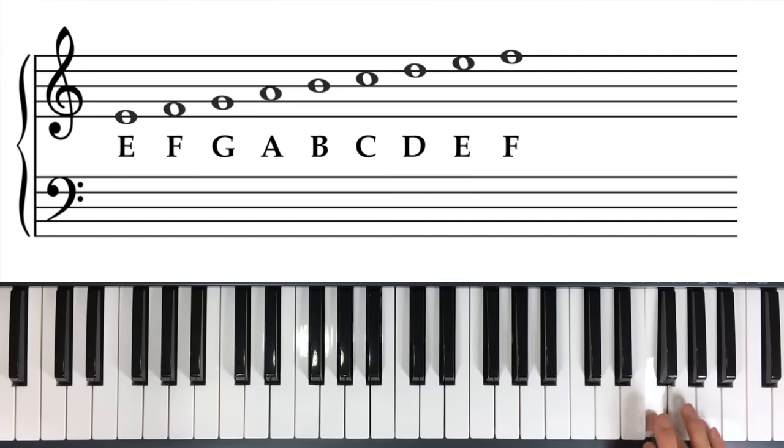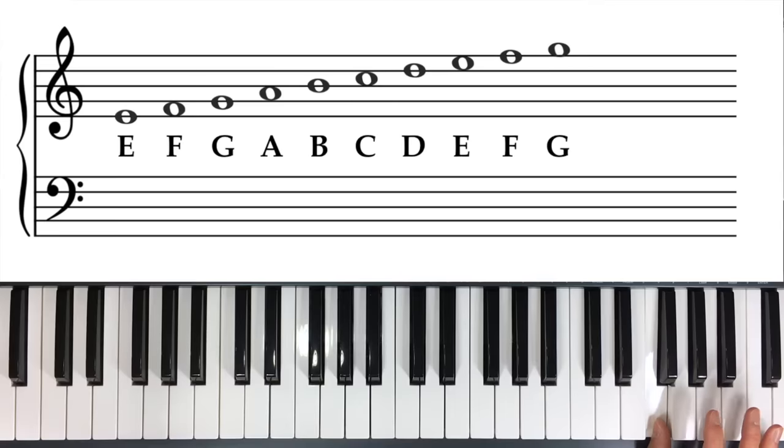Now another important concept is what if we wanted to keep going higher? Well, we have the final line there at F. We know that you have to go line, space, line, space, so the next thing has to be a space. So we draw the G at the top of the line. It doesn't have a line running through it, so it's technically a space. And then we have the G there.